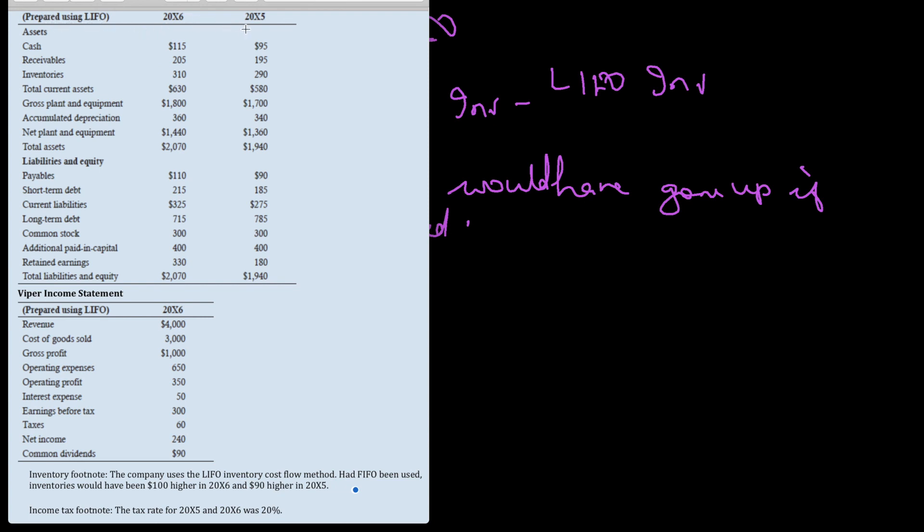If you want, you can take a screenshot or pause the video. This is prepared using LIFO method with balance sheet amounts for two years, 2005 and 2006. Cash, receivable, inventory, total current assets, gross plant and equipment, accumulated depreciation, net plant and equipment, and total assets are all given.